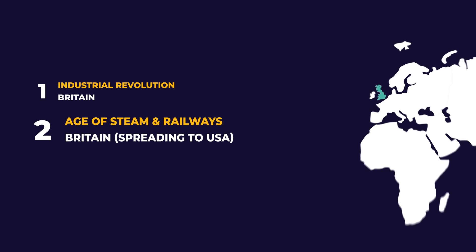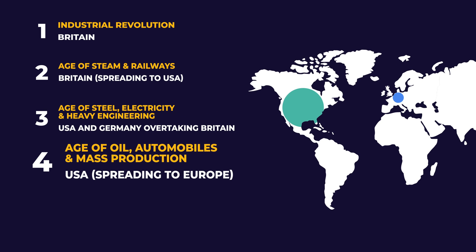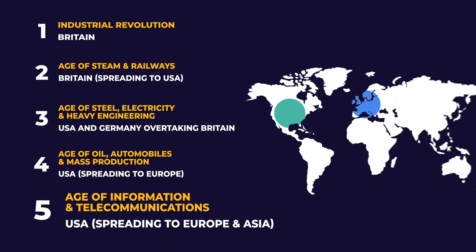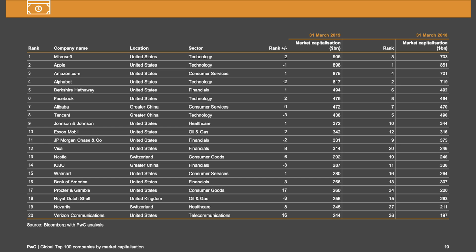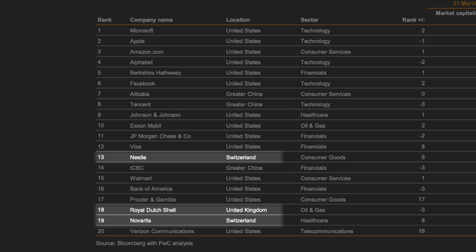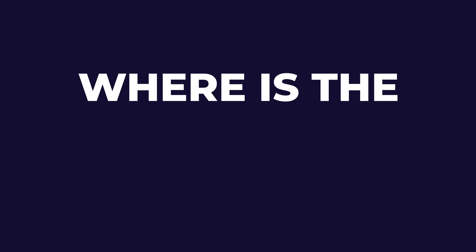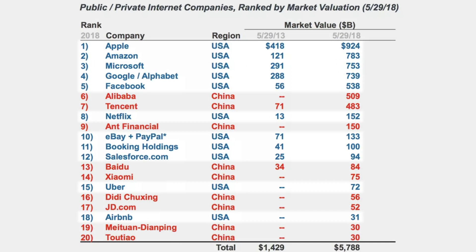Perez also identified that for each revolution, certain geographical regions were more powerful than others. The first was centered in Britain; the second spread to the USA; the third saw the USA as superpower with Germany overtaking Britain; the fourth had the USA spread back to Europe; and in the fifth, we see the USA as superpower with it spreading to Europe and Asia. Technological power is economic power, which is basically geopolitical power. Of the top 20 most valuable companies in the world today, 14 are in the USA, 3 in Europe, and 3 in China. Of the world's top 10 most valuable companies, 7 are tech companies. Of the top 20 internet leaders, 11 are in the USA and 9 are in China.